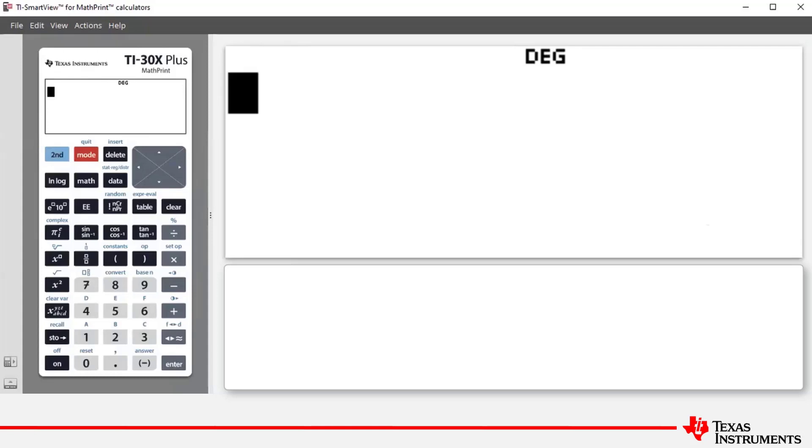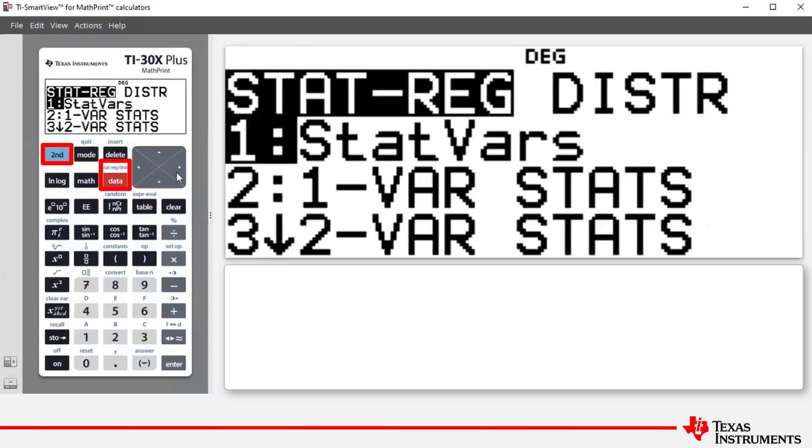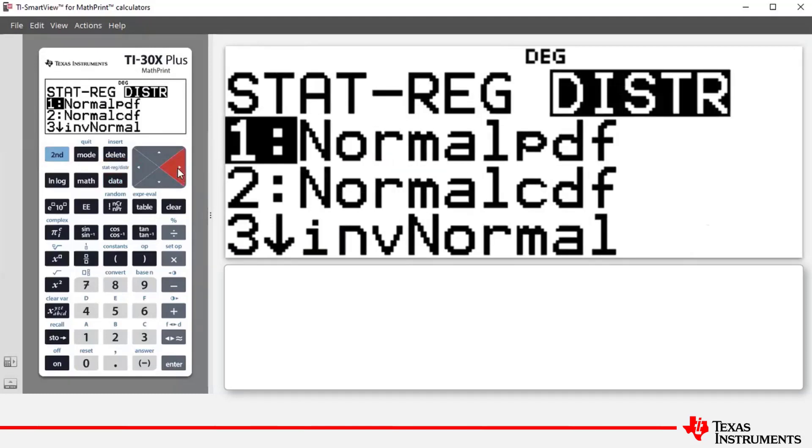To access the normal distribution set of commands, press second and then data, and then use your arrow key to scroll right to highlight distributions.